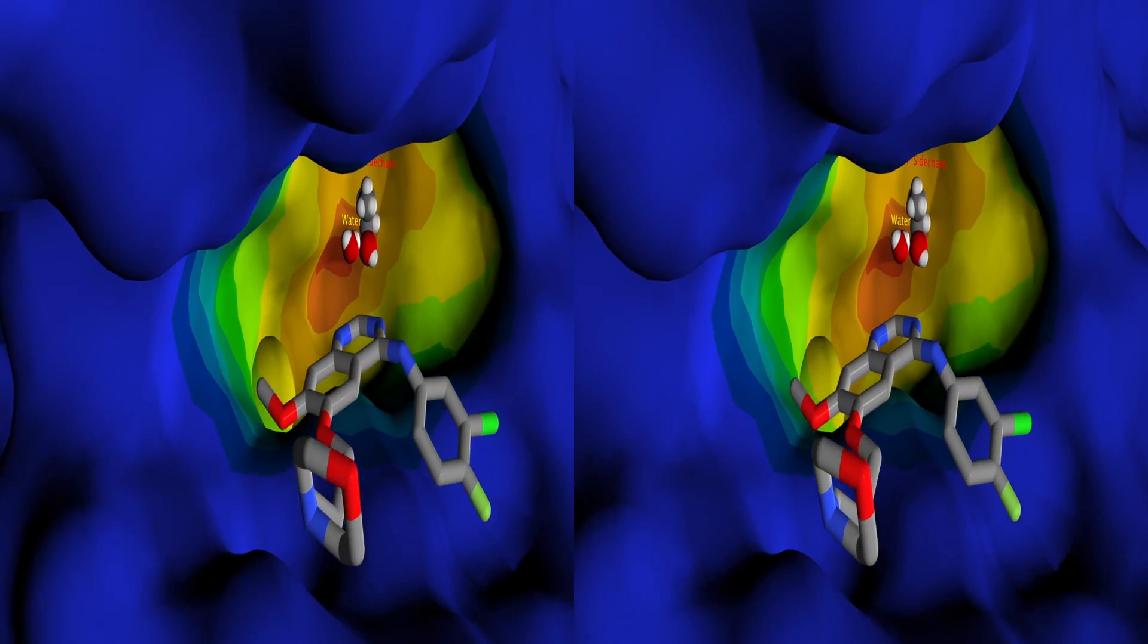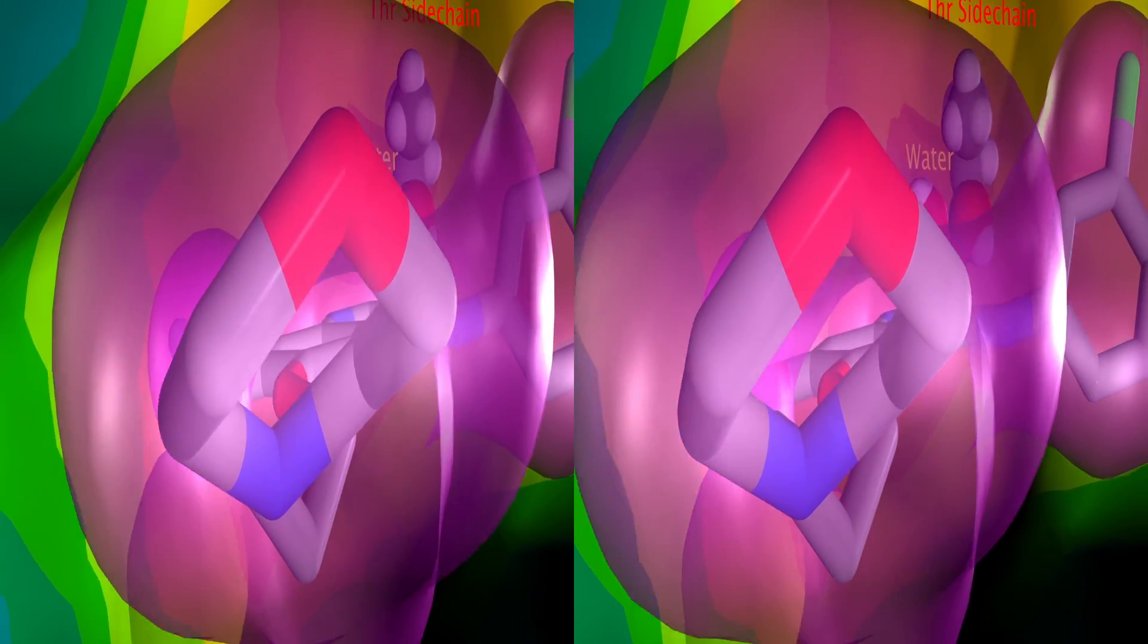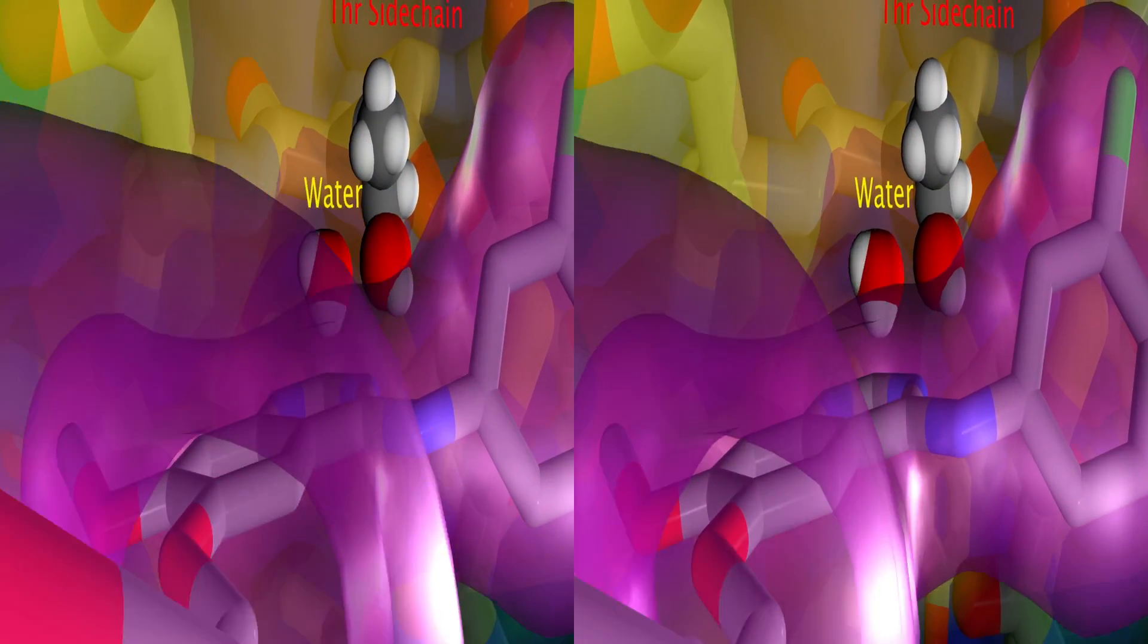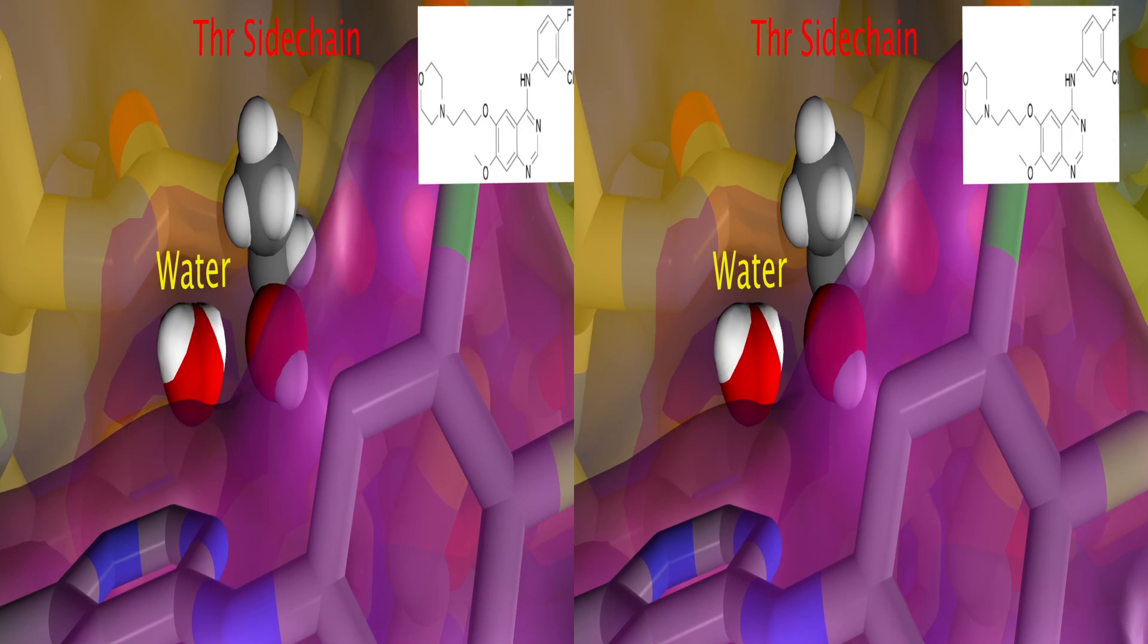The higher concentration of Iressa as compared to ATP allows the drug to prevent ATP from binding. The crucial binding region for Iressa is at the side chain of the amino acid threonine at position 790.